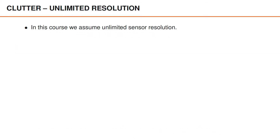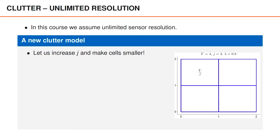In this course, we assume unlimited sensor resolution. This assumption simplifies things substantially, and it is often a good approximation, especially for the sensors and settings encountered when working with self-driving vehicles. We can obtain a reasonable model for unlimited resolution by starting with a clutter model for limited sensor resolution and simply increasing the number of resolution cells so that all cells become smaller.